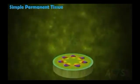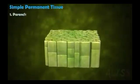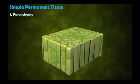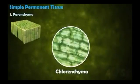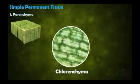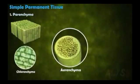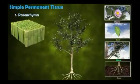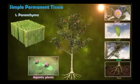Simple permanent tissue consists of parenchyma, colenchyma, and sclerenchyma. Parenchyma is the most abundant type of tissue, found in all parts of a plant. In transverse section you can see the intercellular spaces. Parenchyma with chloroplast is called chlorenchyma. In plants like lotus you also see aerenchyma, which is parenchyma filled with air spaces — it helps in floating. Parenchyma is a filler tissue; cells are generally oval to cylindrical in shape, and in aquatic plants aerenchyma provides buoyancy.